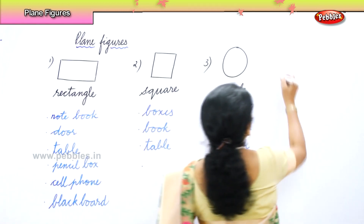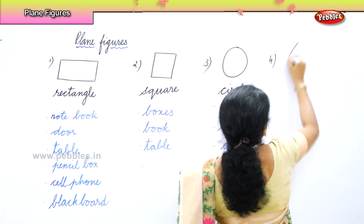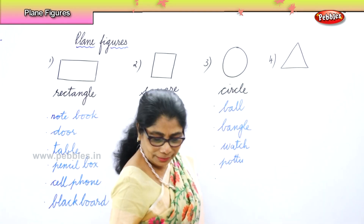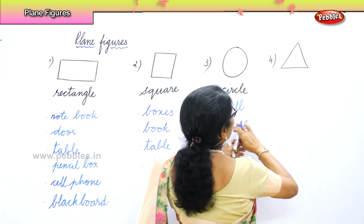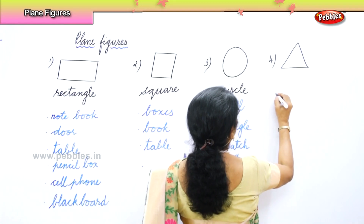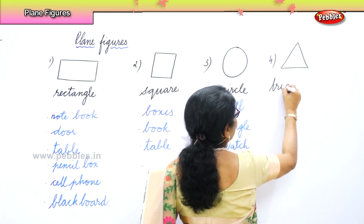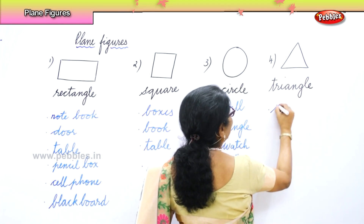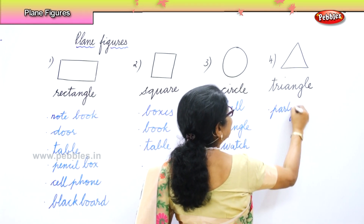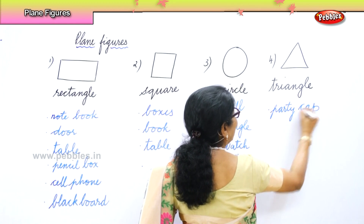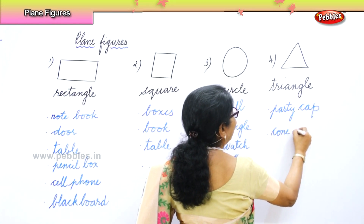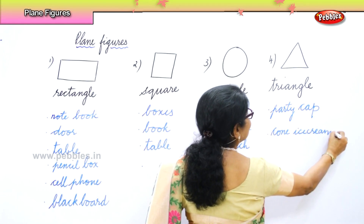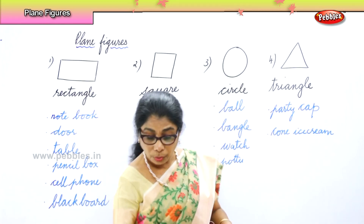Another shape that you normally have is the triangle. For this you will say a party cap. You have a party at home and you have a party cap, and this shape is called triangle. Where do you find triangle? A party cap. Cone ice cream. What else is in triangle? You look around.